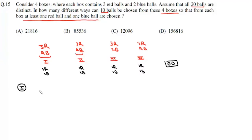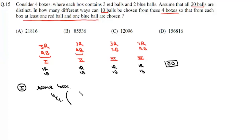These 2 remaining balls may come from either the same box or from 2 different boxes, giving us 2 cases. Case 1: they come from the same box. First we choose that box — 4C1 ways. Then within that box, the 2 extra balls are either 3 red and 1 blue, or 2 red and 2 blue.